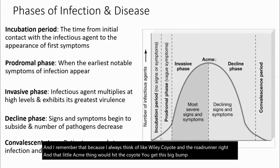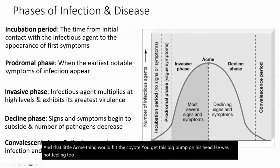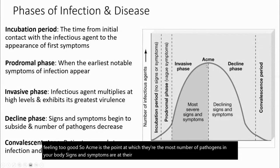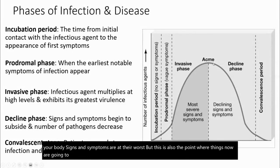He gets a big bump on his head — he was not feeling too good. Acme is the point at which there are the most pathogens in your body. Signs and symptoms are at their worst. But this is also the point where things are going to start to get better, as the immune system kicks in and helps to clear things.